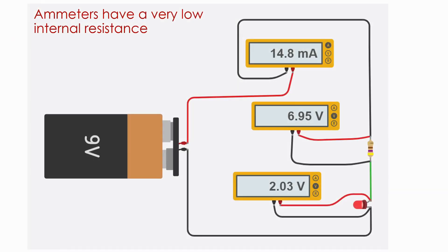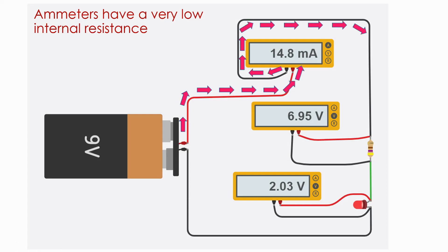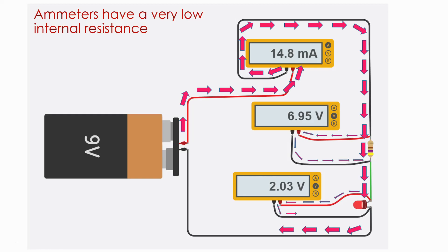Multimeters in ammeter mode must have a very low internal resistance to ensure that all the current in the circuit flows through them. Here we can see the large arrow denoting the full current going through the ammeter, which is placed in series with the other circuit components.